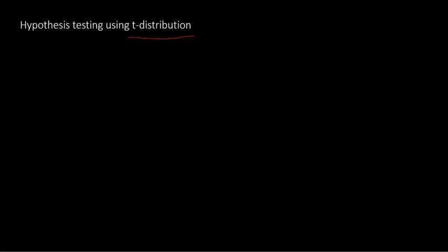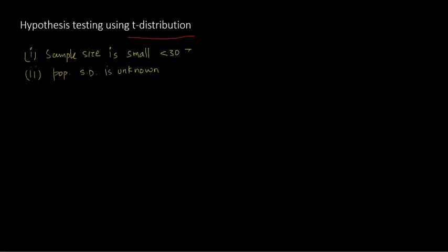In z-distribution, there are two conditions: the sample is supposed to be large, and the population standard deviation is supposed to be known. For t-distribution, the conditions are a little different. One is if the sample size is small — less than 30 — then I use t-distribution. Second, the population standard deviation is unknown. When these two conditions meet, I use a t-distribution to test the null hypothesis, given by a mathematician called Gossett.